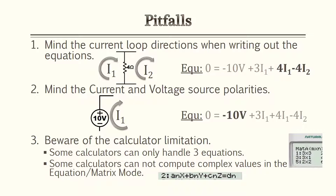Also, mind the current and voltage polarities when writing your equation. For instance, 10 volts could be positive or negative — in this case it's negative 10 volts based on the current flow direction. Also be aware of your calculator limitations: some calculators can only handle three equations. The Casio 115 in matrix or equation mode can handle three equations, and it cannot handle complex functions or polar form.